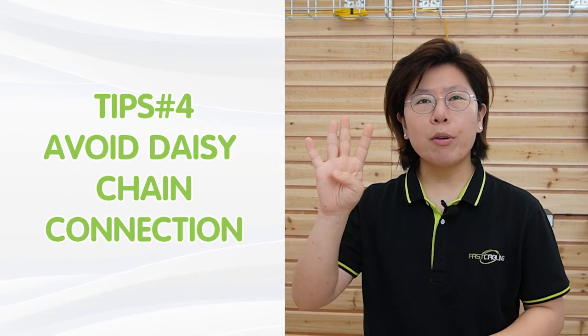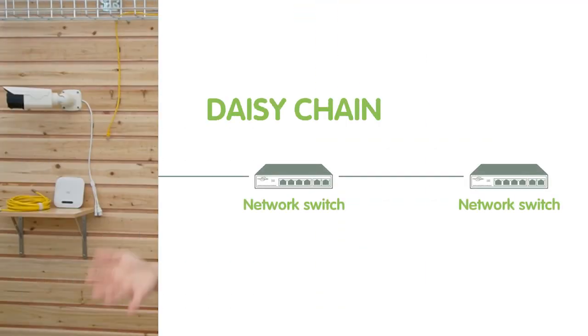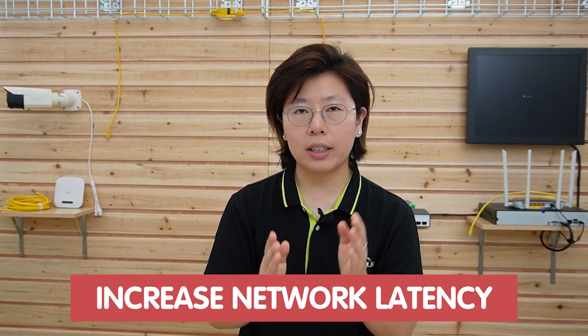Tip number 4: avoid daisy chaining. Daisy chain is a network topology where multiple switches are connected in a linear fashion, with each switch connected to the next in a chain. We want to avoid this because daisy chaining leads to network latency. There is a video linked here on how to avoid daisy chain in a network system.